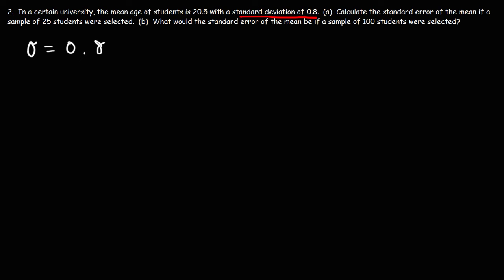Now to calculate the standard error, we need to use a formula that is very similar but with different variables. The standard deviation, I mean the standard error of the mean, is going to be the standard deviation of the population divided by the square root of n. As we said before, the standard deviation of the population is 0.8.